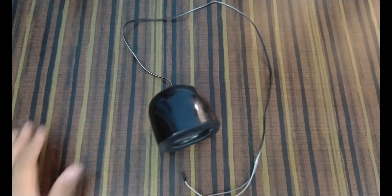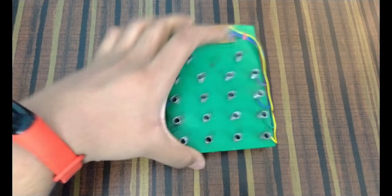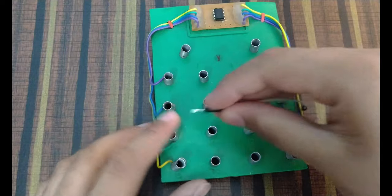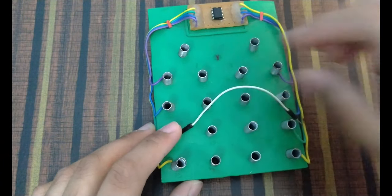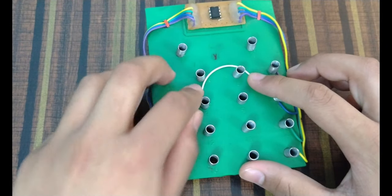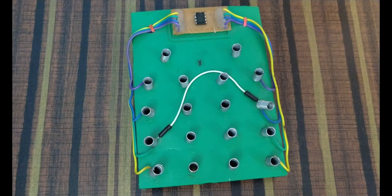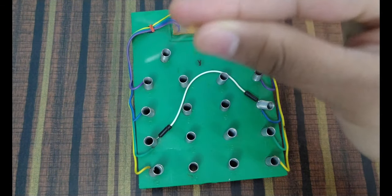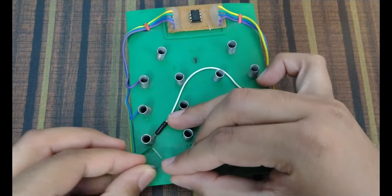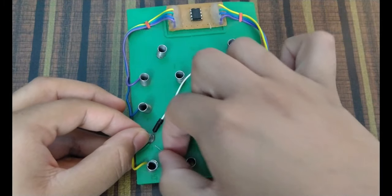In the first step we have to take our IC555 and connect one jumper wire in pin number 2 and in pin number 6. Then you have to take your 0.01 microfarad capacitor and connect it in pin number 1 and pin number 2.